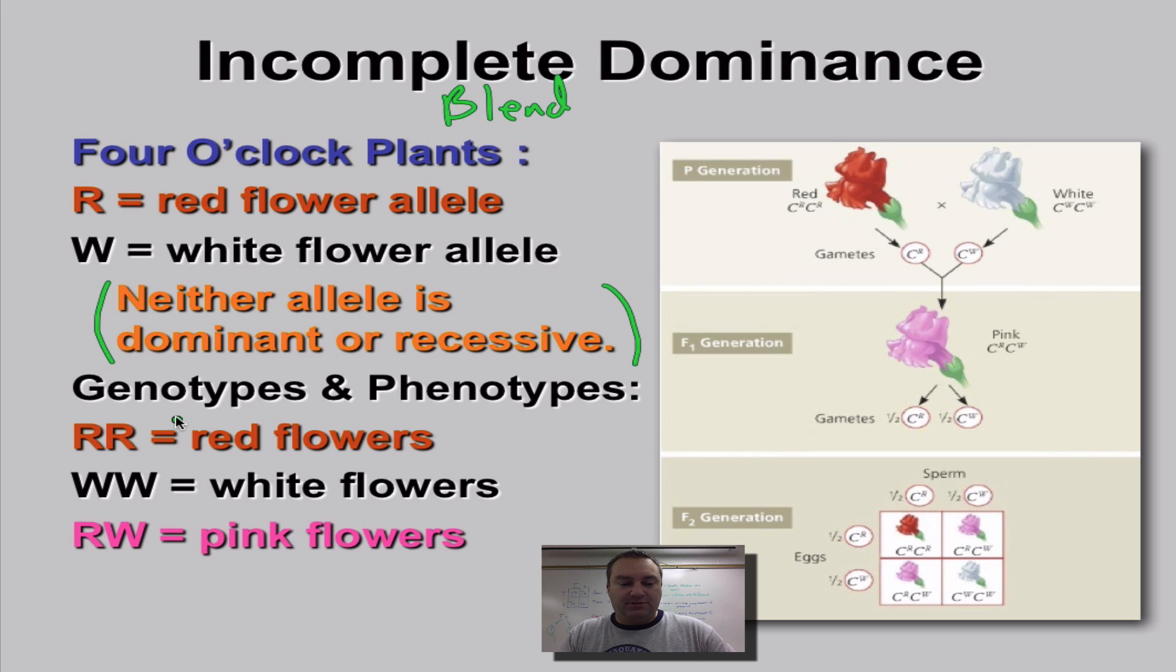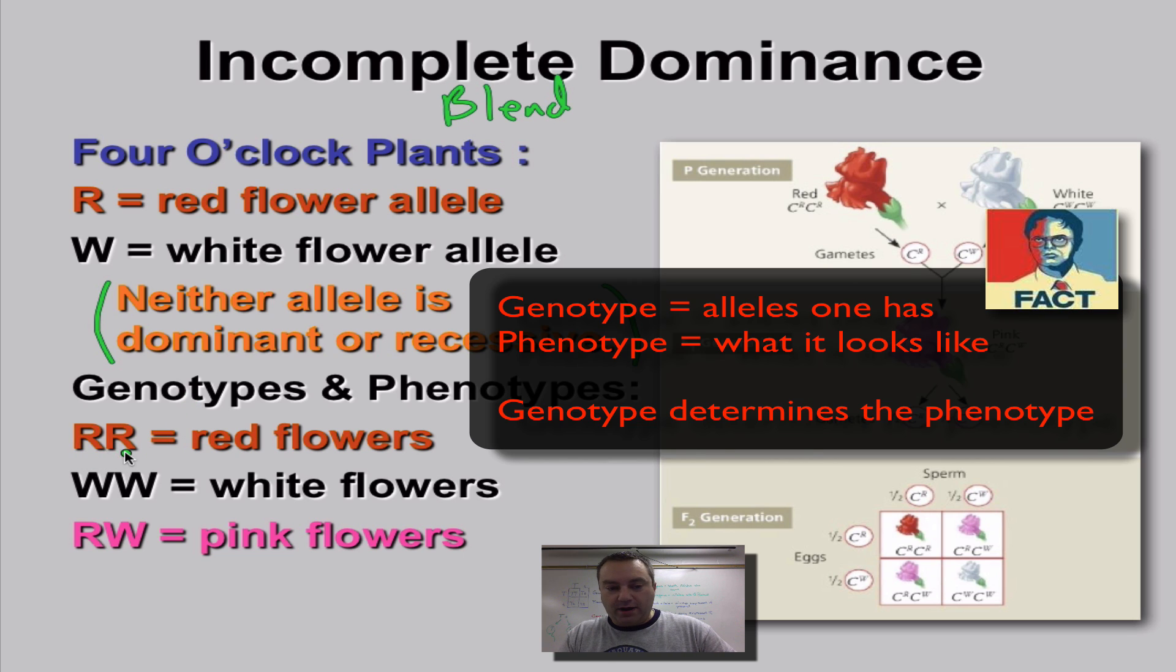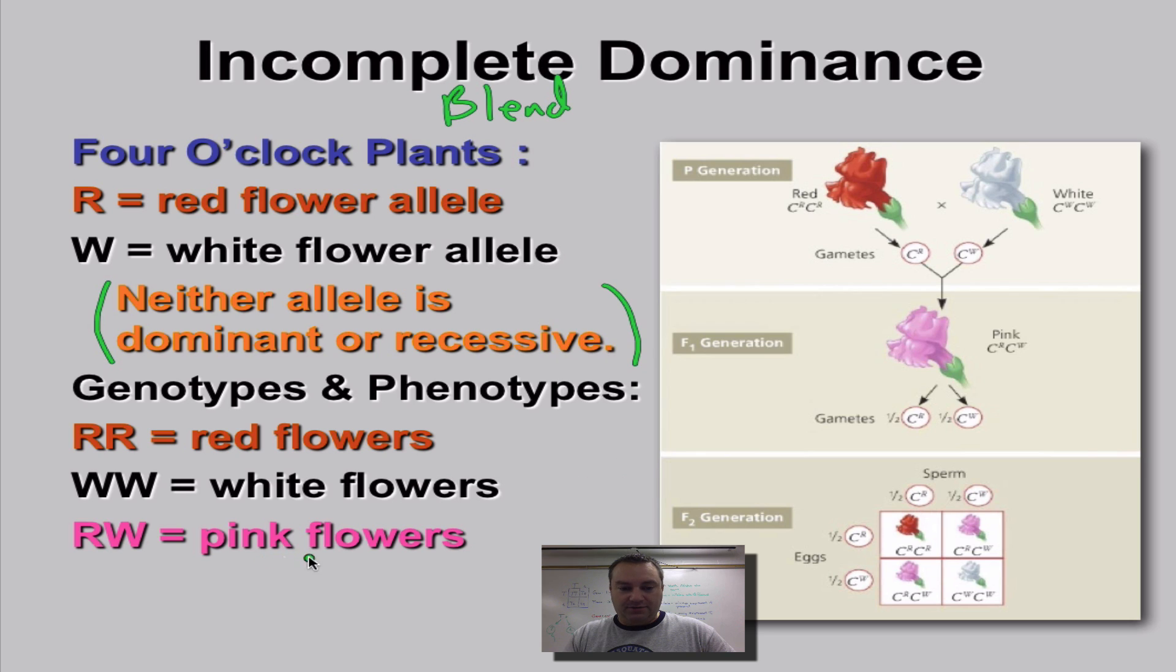The red and the white is neither dominant nor recessive. So look at your genotypes and phenotypes. If you have two big R's, you're going to have red flowers. And if you have two W's, you're going to have white flowers. It's the heterozygous individuals that show a blending of the traits because you're going to come up with pink flowers.